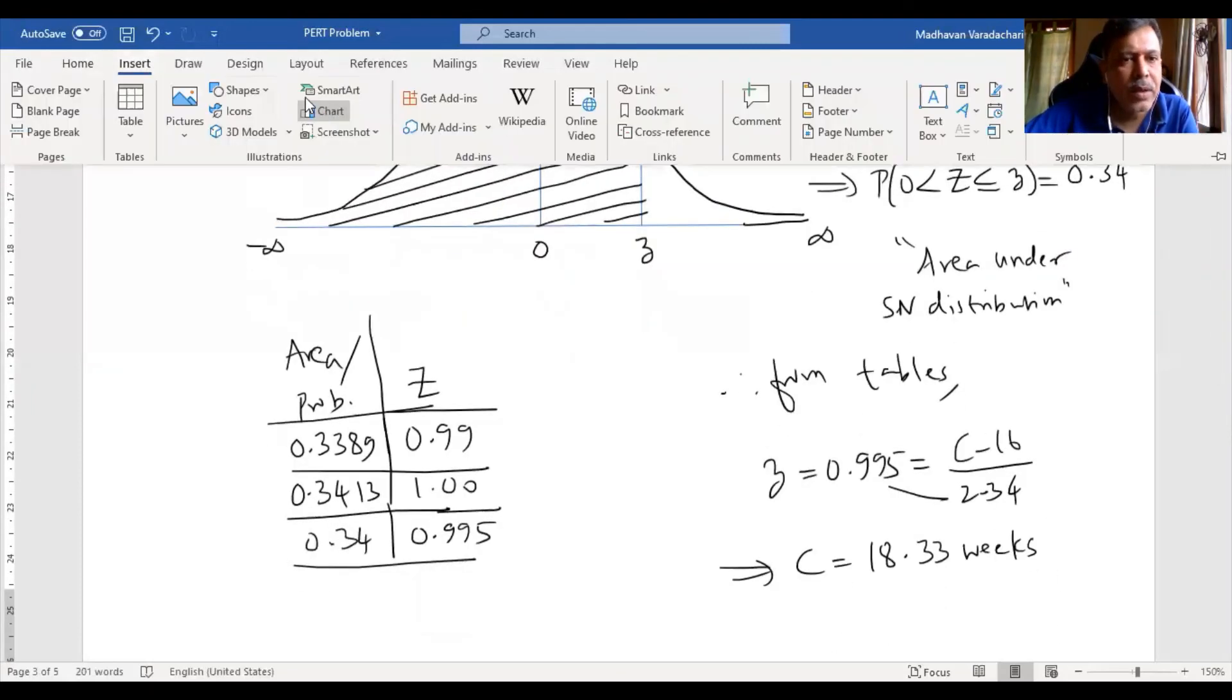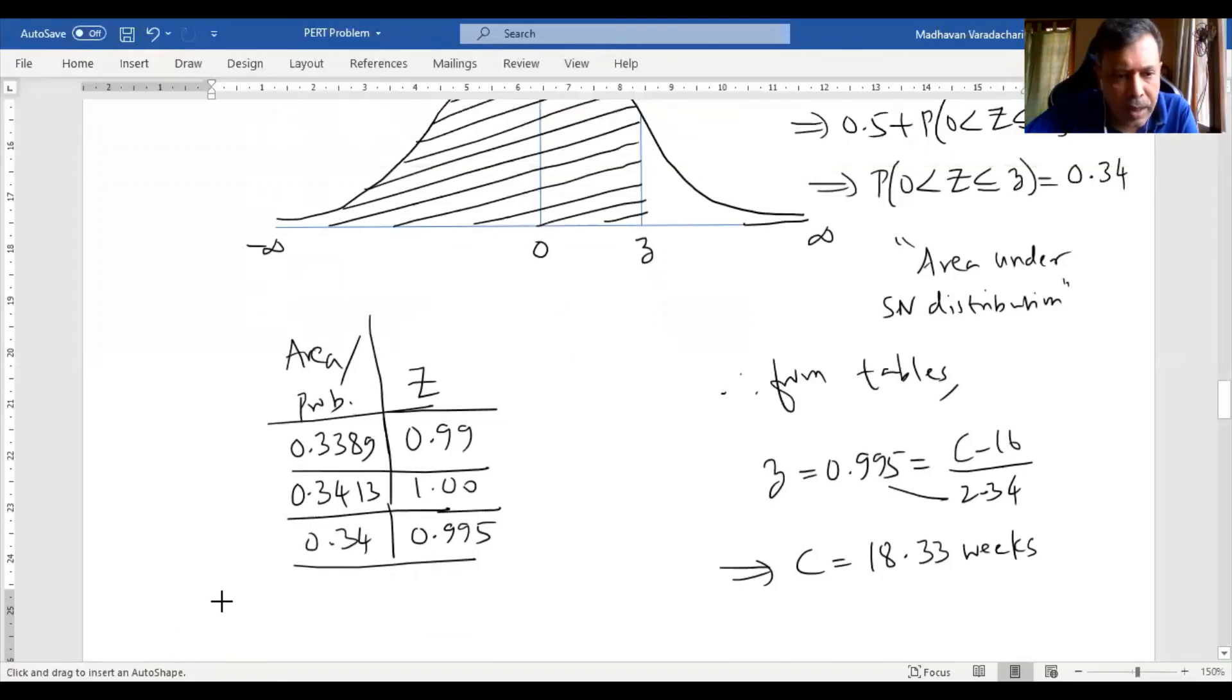So that ends this particular question overall because we have done all the questions A, B, C, D and E. This is about the project evaluation and review technique where we don't have the duration as a deterministic value, whereas it is considered probabilistic. The activity durations follow a distribution called beta distribution. We used the mean and variance of that beta distribution to find individual activity durations, then applied those mean durations to find the critical path and subsequently solved these probability problems.